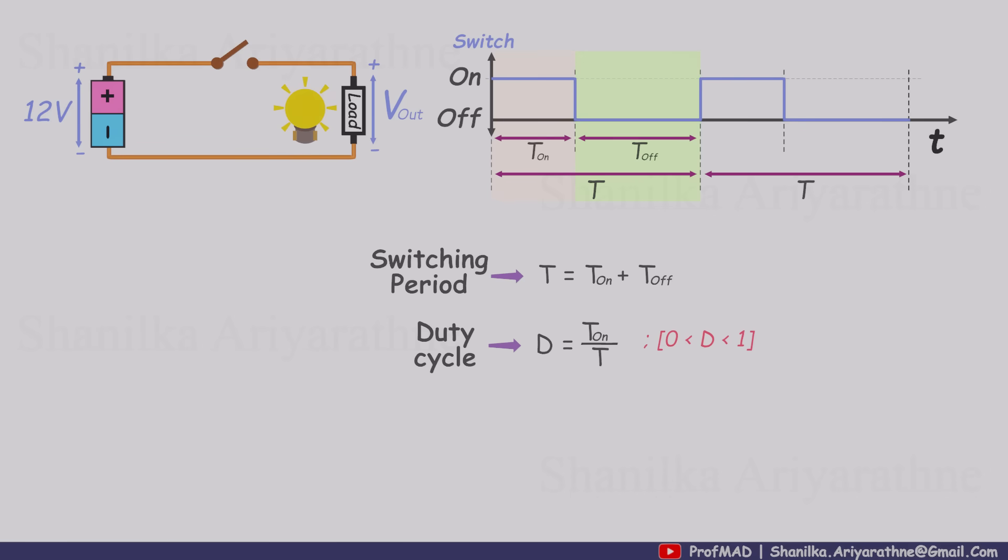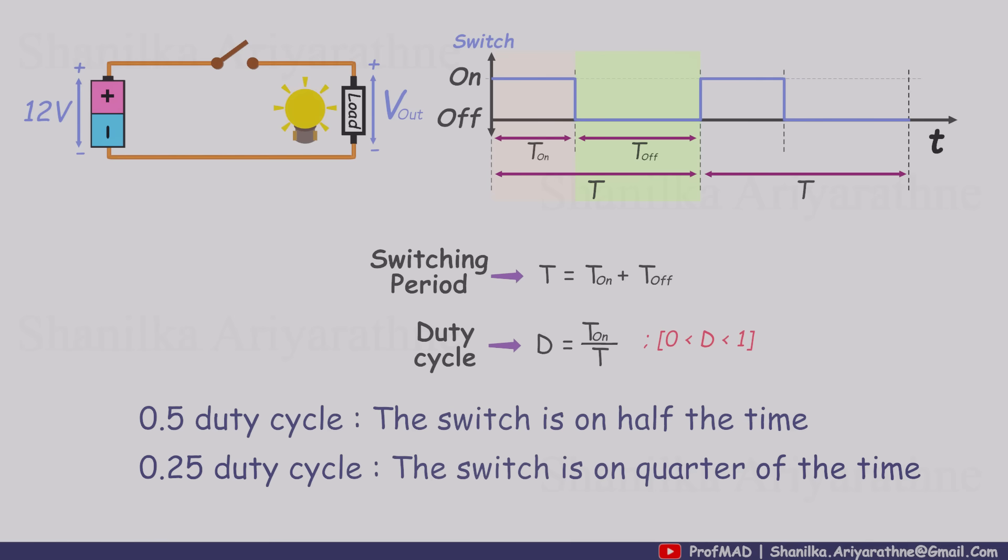The duty cycle is always greater than zero and less than one. If the switch is on half the time, that's a duty cycle of 0.5. If it's on only a quarter of the time, that's 0.25. And keep in mind that we can also describe both the on time and the off time entirely in terms of the duty cycle.